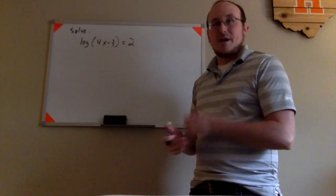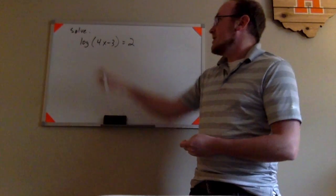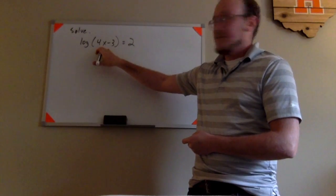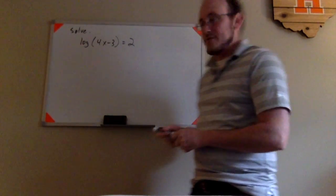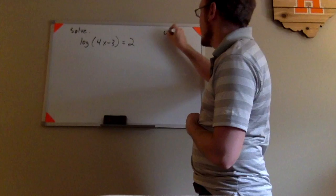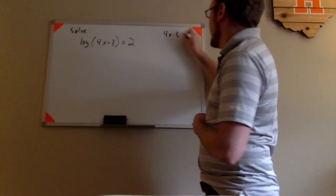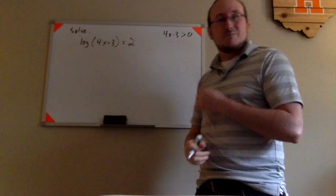That doesn't mean for this example that x has to be greater than 0. It means what is in here, the 4x minus 3, has to be greater than 0. So I'm going to do a little bit of scratch work off to the side to make sure we understand that this has to be greater than 0.